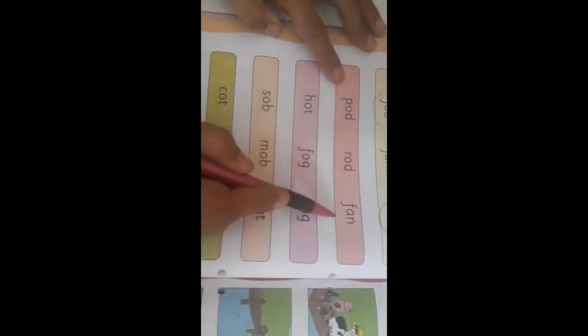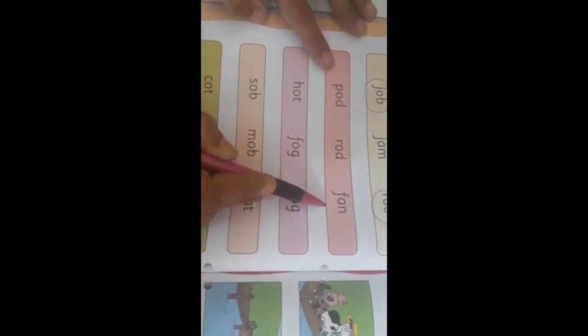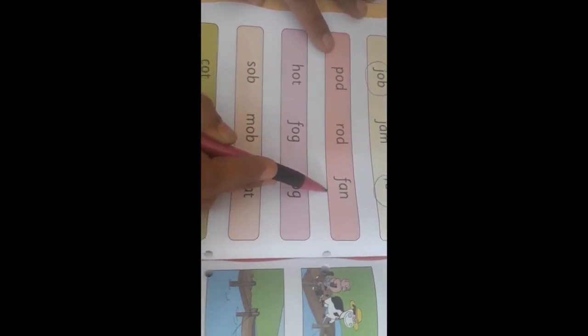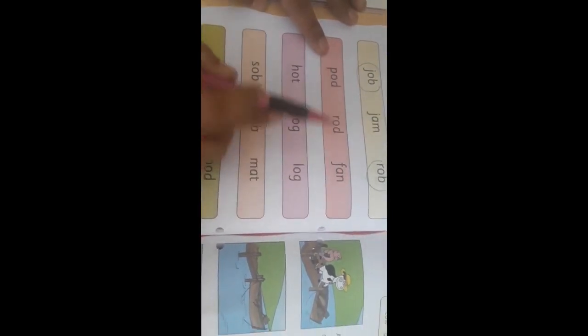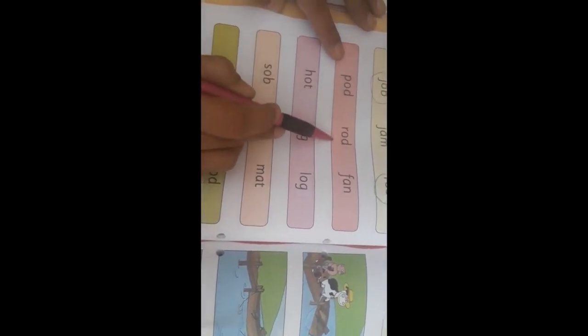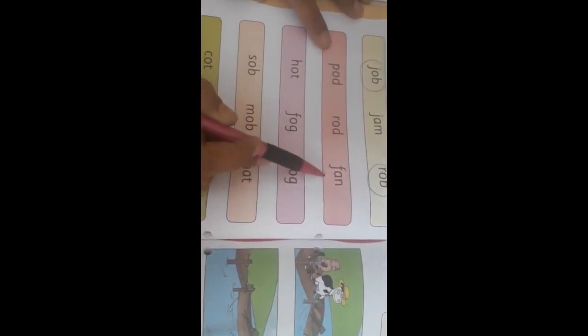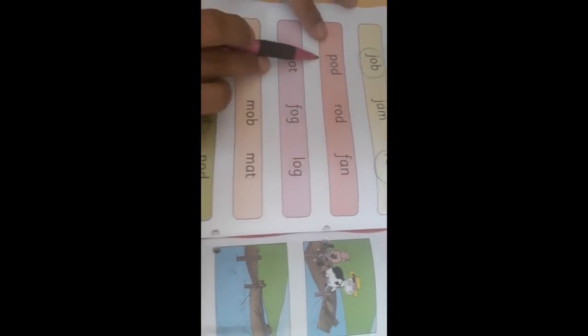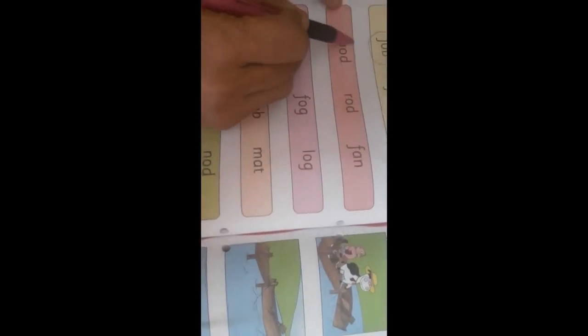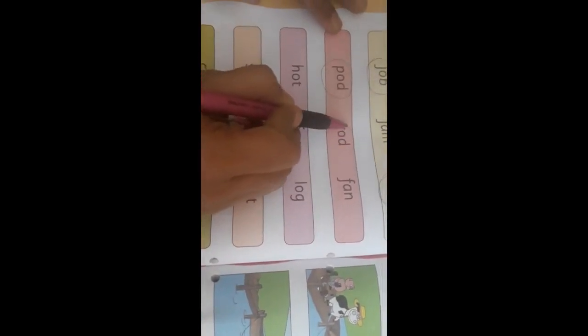Now here pod, rod, fan. Now tell me children, which two words are rhyming? Pod and rod, yes. Because if you see, it is fan. So fan is not rhyming with rod or pod. So we are going to circle pod and rod.